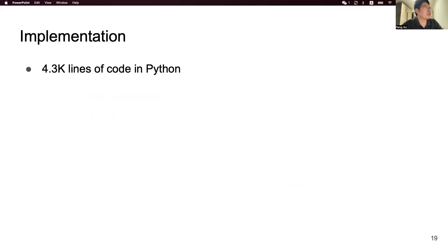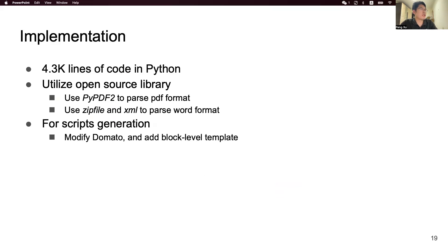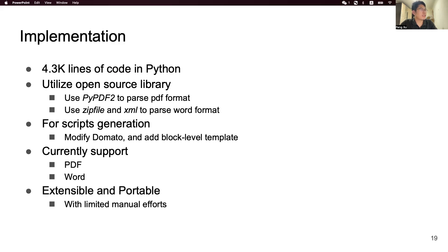For implementation, we developed Cooper in 4,300 lines of Python code. Cooper also utilizes some open-source libraries — for example, it uses libraries to parse the PDF format and XML to parse the Word format. For script generation, we utilize Domato and improve it with a block-level template. Currently, Cooper supports two formats: PDF and Word. It's notable that Cooper is extensible and portable — we can easily add new features and apply Cooper to new document formats with limited manual effort.